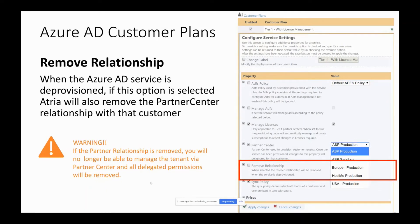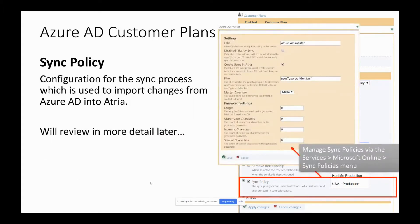The Remove Relationship setting is an important one — by default we leave it unchecked. If you deprovision the Azure AD service from a customer and this is checked, it will actually remove your relationship with that tenant in Azure AD, meaning you cannot access that customer. All of your permissions for that customer will be removed, so be careful. You'll have to get that customer to give you access back again. The last thing is the sync policy, which is the configuration for the sync process used to import changes from Azure AD into Atria. The system comes with two default policies, and these can be changed through the interface from version 12.6.7 onwards.